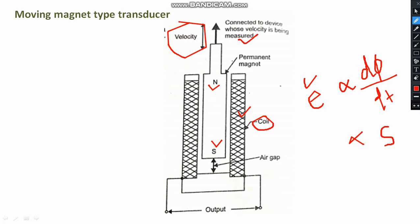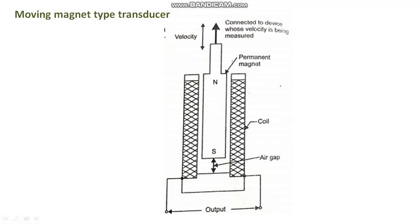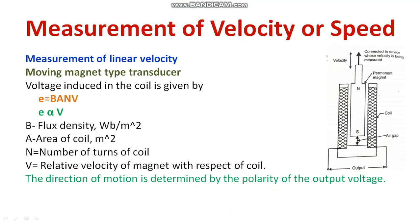The moving object is connected to the permanent magnet, as is clear in the diagram. As the velocity is higher, the induced EMF will be higher. So E is directly proportional to velocity v. E is the induced EMF in volts, and v is velocity in meters per second. Mathematically, the induced EMF can be written as E = B × A × N × V, where E is induced EMF, B is flux density, A is area of the coil, N is the total number of turns in the coil, and V is the relative velocity of the magnet with respect to the coil.